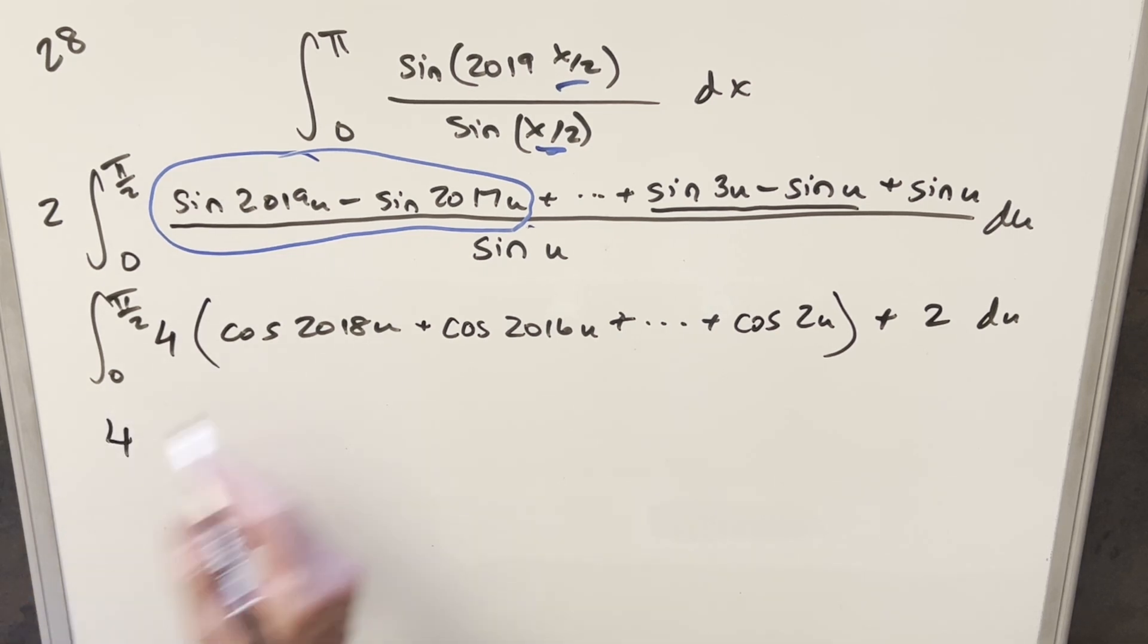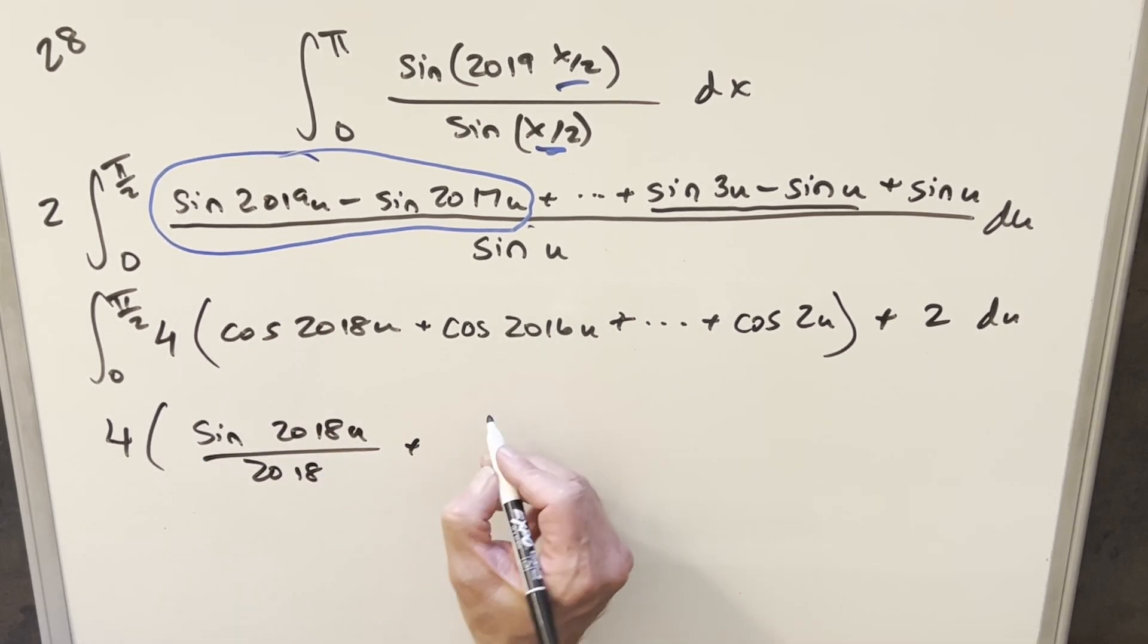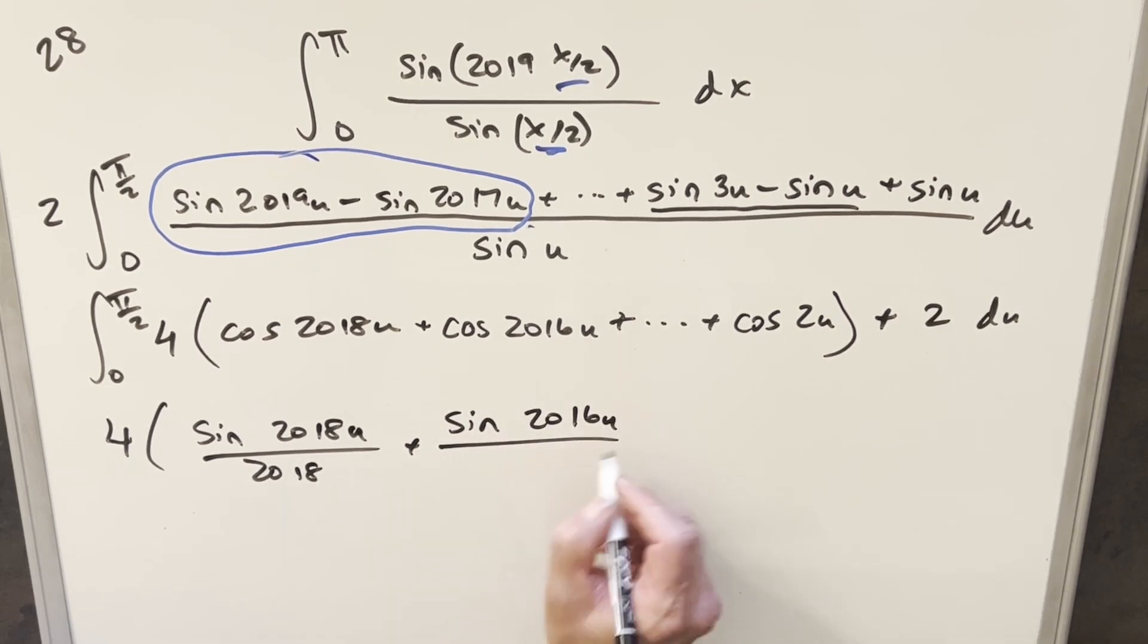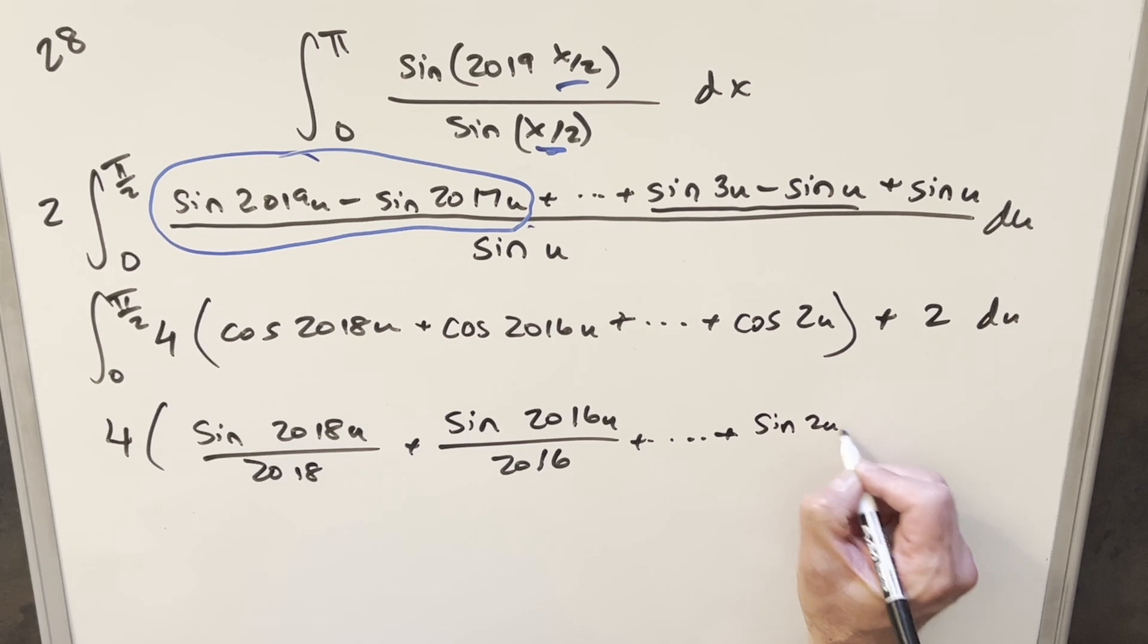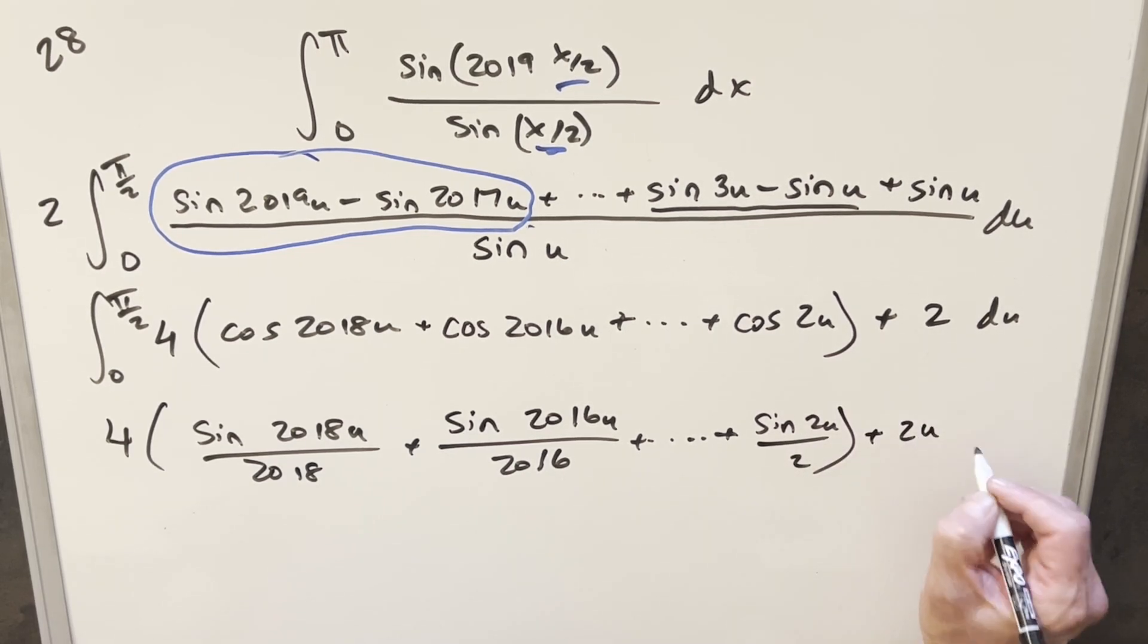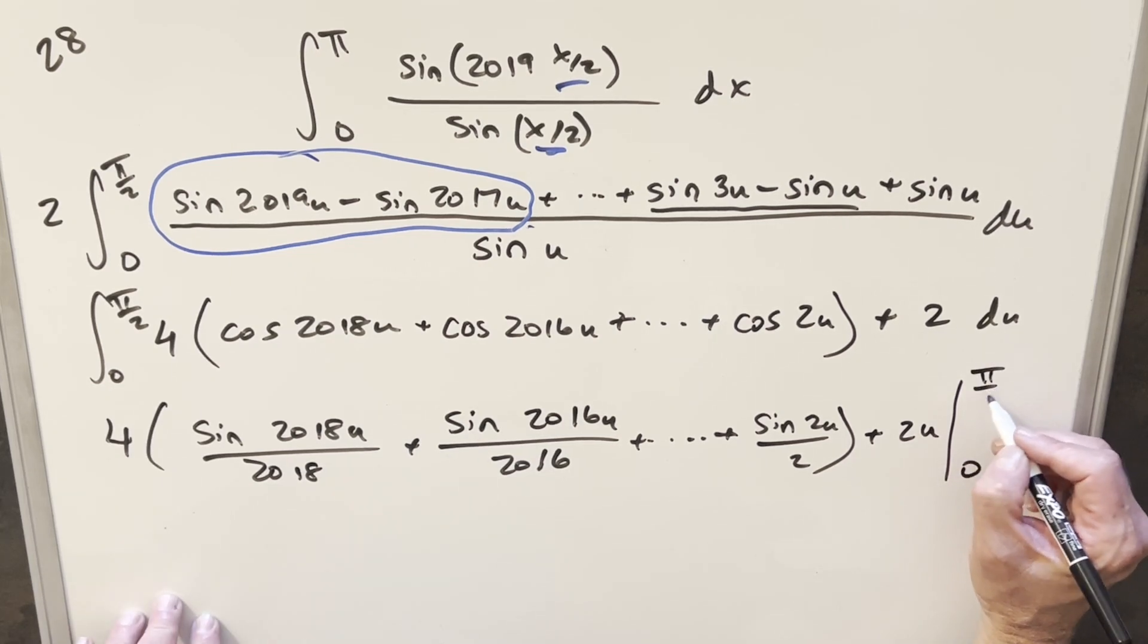Okay, so now we'll go ahead and integrate. This is all going to be easy stuff to integrate. So we'll have the 4 out front. The integral here is going to become sine 2018 u over 2018, and then for the next one, we're going to have sine 2016 u over 2016. We integrate a thousand terms, and then we'll do this last one. Integrating cosine 2 u, that's going to become sine 2 u over 2, and then here, just integrating 2, that's going to become 2 u. And we just need to evaluate from 0 to pi over 2.